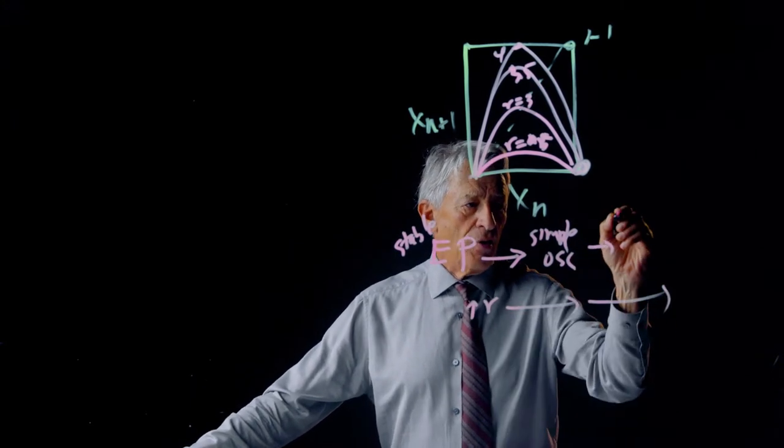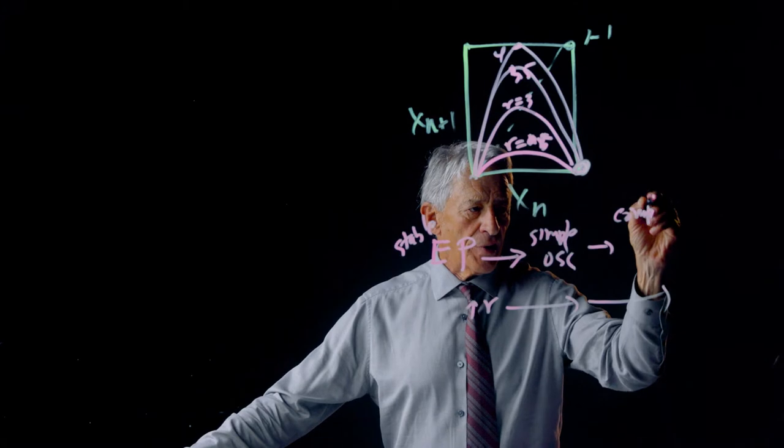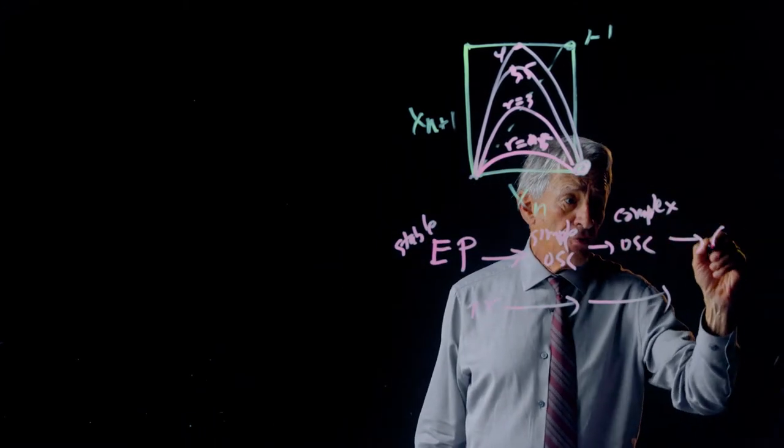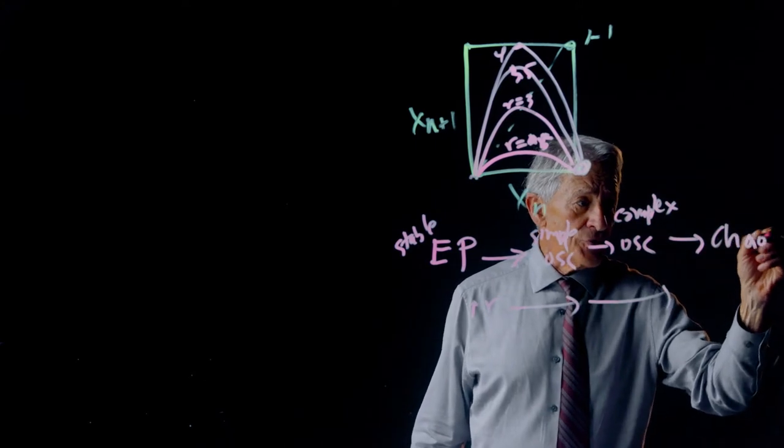Further increase in r produces a complex oscillation, and then further still increases of r produce chaos.